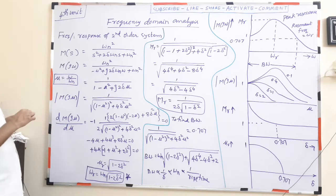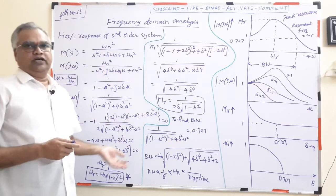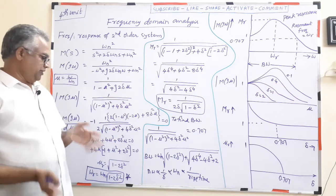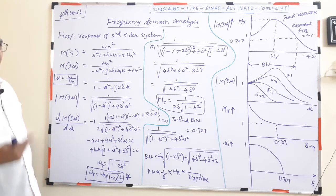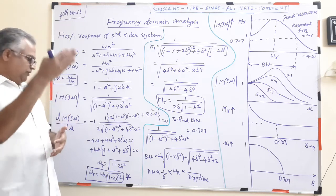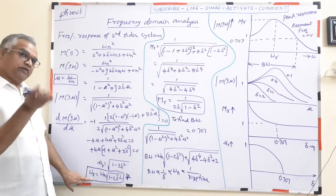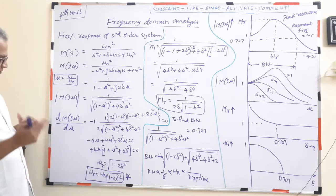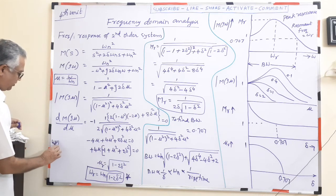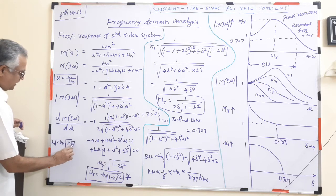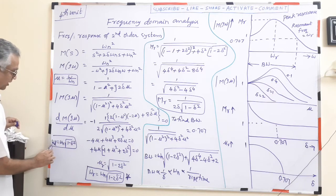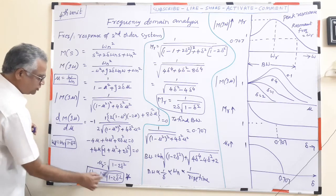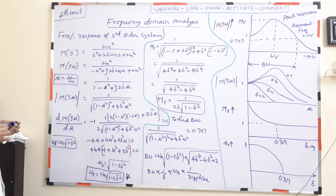Compare this with time domain analysis, where we found the damped natural frequency ωd = ωn·√(1 − δ²). Here, the resonant frequency is ωr = ωn·√(1 − 2δ²) — a small but important change. In time domain we found when the peak occurs; in frequency domain we find at what frequency maximum occurs.